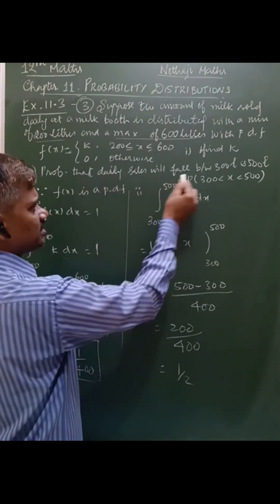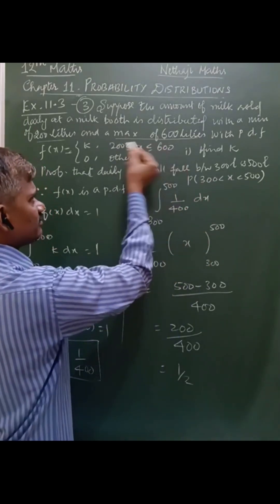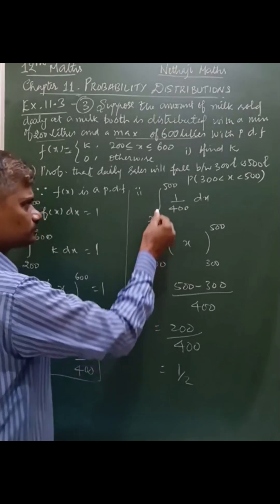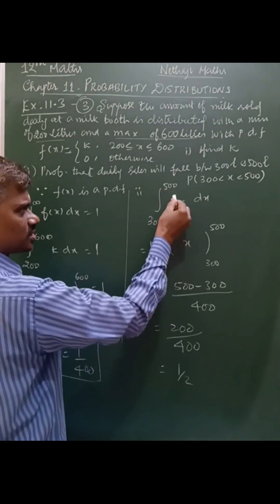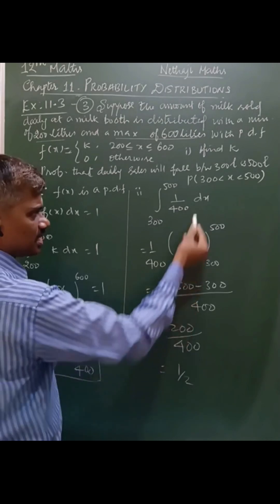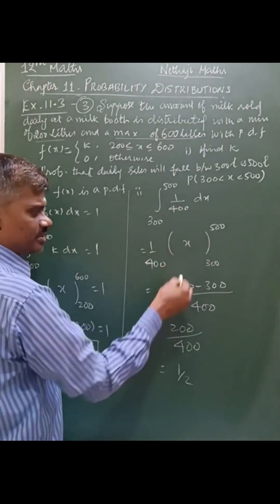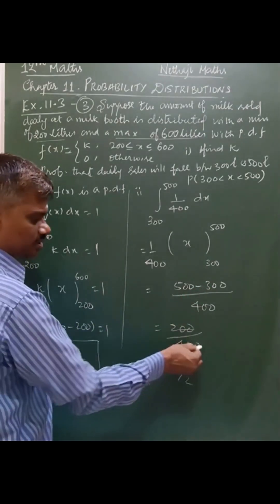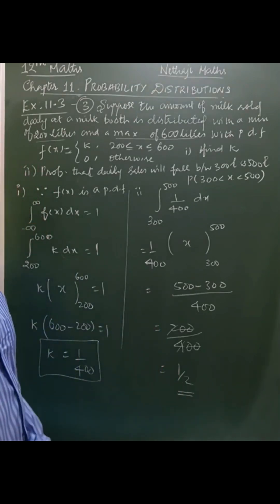Second one, the probability between 300 and 500. So, this is the probability between 300 to 500.